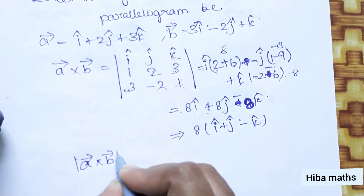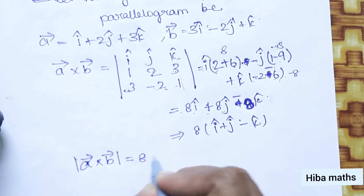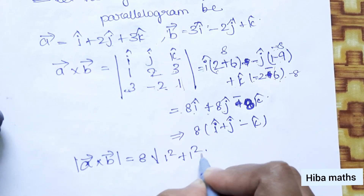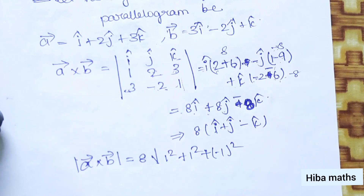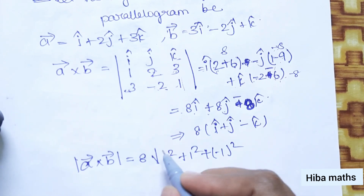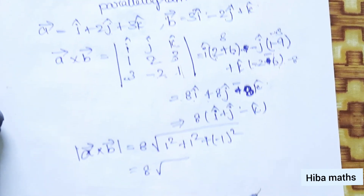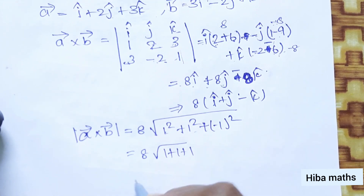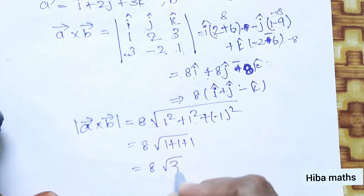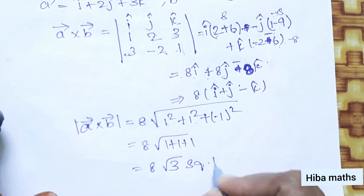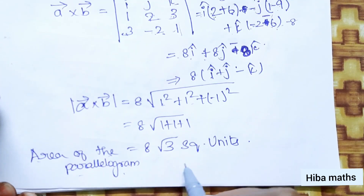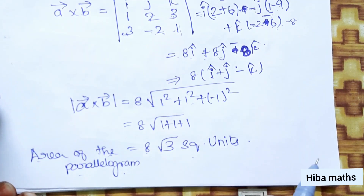The magnitude of a vector cross b vector equals 8 times the square root of 1² + 1² + (−1)², which equals 8 times √3. Therefore, the area of the parallelogram is 8√3 square units.